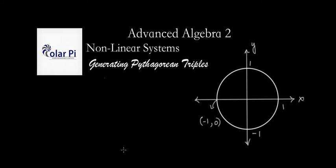Welcome. So in this video, I'm going to show you how to derive a simple formula by solving a system of two equations and two unknowns. And that simple formula is going to allow you to write infinitely many Pythagorean triples. In other words, using that formula, you can come up with infinitely many Pythagorean triples.